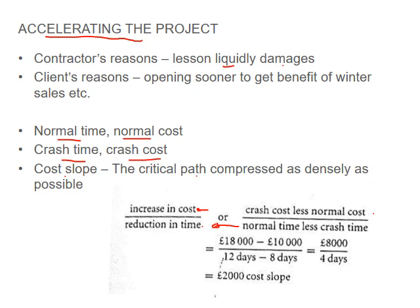For example, if the project had a normal cost of ten thousand pounds and when accelerated the cost is eighteen thousand pounds, your cost slope is eight thousand divided by the difference in time. Normal time is twelve days, crash time is eight days, giving four days difference, so you divide the cost difference by the time difference to get your cost slope.